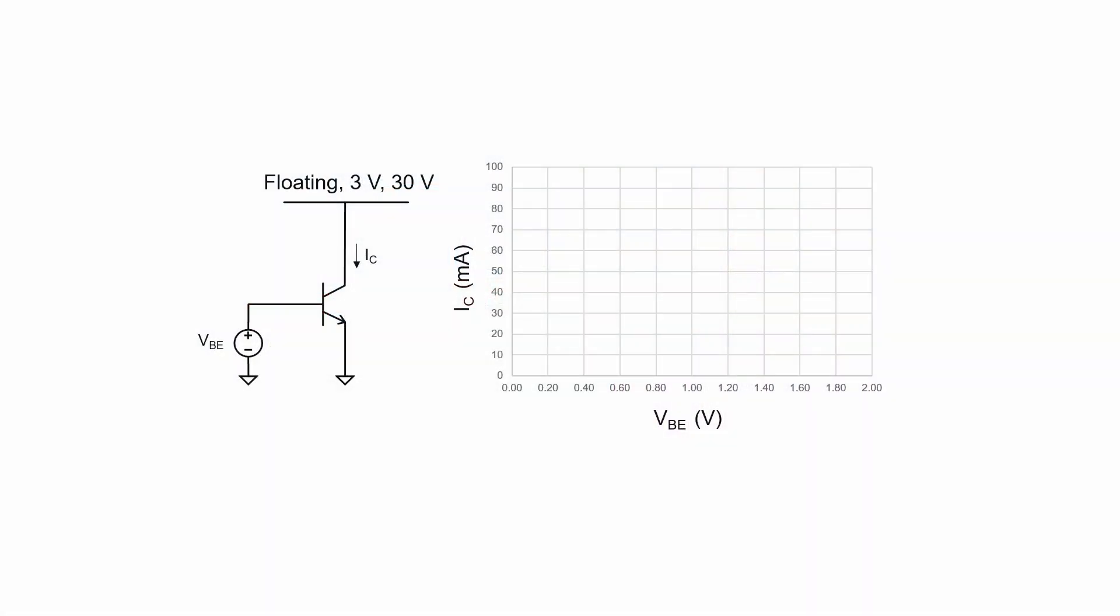Let's now see what happens to the collector current as we change the base emitter voltage in the same way. We have three different curves plotted here. Floating is very obvious and the curves for 3 volts and 30 volts are so close to one another that I'm not labeling them here. If the collector is floating, then we're never going to have any current going through it. But I think that what's very interesting about this plot is that 3 volt and 30 volt curves almost overlap each other.